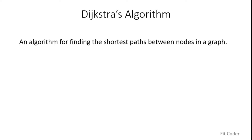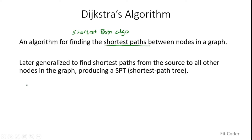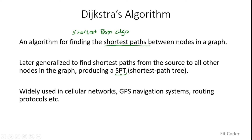Dijkstra's algorithm is an algorithm for finding the shortest path between nodes in a graph. It is also known as the Shortest Path Algorithm. Basically, if you are given a graph and a source node and you have to find the minimum distance to reach a destination node, we use this algorithm. It has also been generalized to find the shortest path from a source node to all other nodes of the graph, and the resultant structure is the Shortest Path Tree or SPT. This is an important graph algorithm with many real-life applications, widely used in cellular networks, GPS navigation systems, and routing protocols.